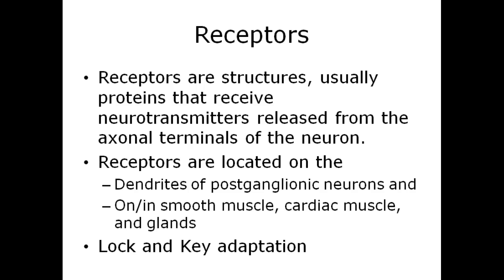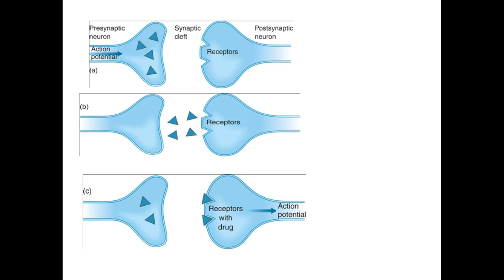Receptors are structures, usually proteins, that receive neurotransmitters released from the axon terminals of the neuron. Receptors are located on the dendrites of postganglionic neurons and on or in the target organs, and are usually referred to as lock and key in their adaptation. The neurotransmitters are released and lock into the lock-and-key mechanism in the postsynaptic neuron, which then activates an action potential.